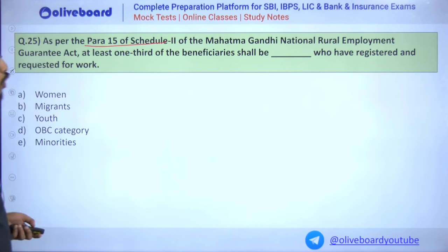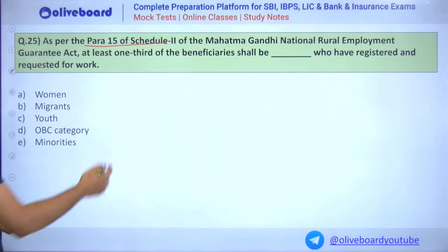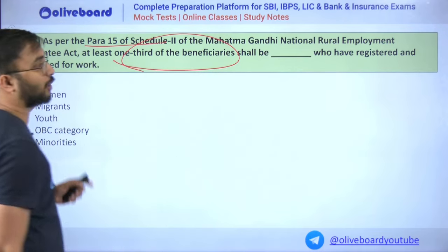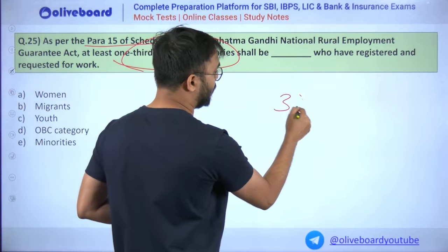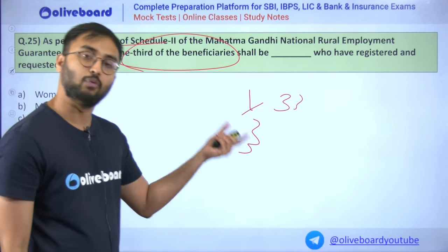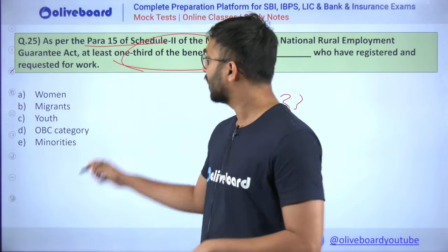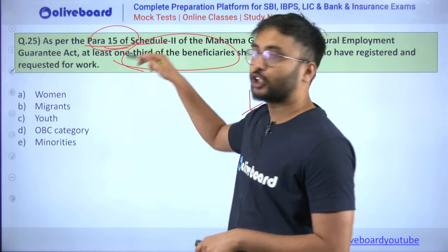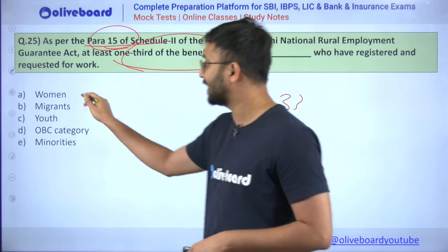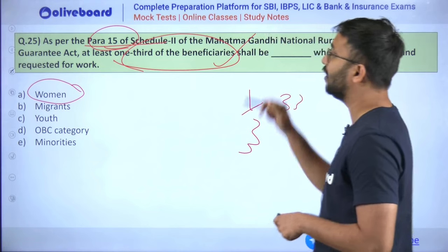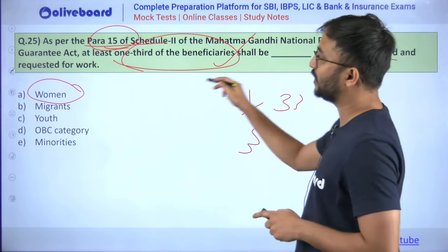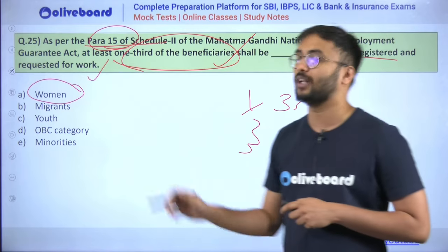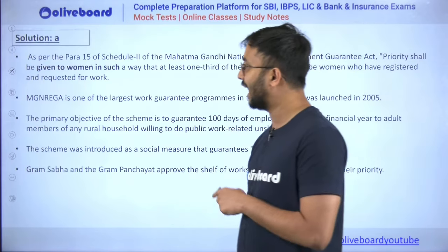Question 25: As per Para 15 of Schedule 2 of Mahatma Gandhi National Rural Employment Guarantee Act (MGNREGA), at least one-third of the beneficiaries shall be women. Just as panchayats and gram panchayats have 33% reservation for women, MGNREGA also mandates that women constitute one-third of beneficiaries who have received work in a particular area.